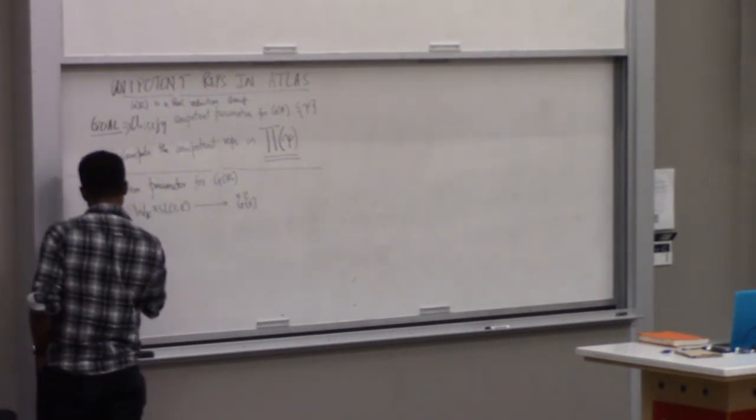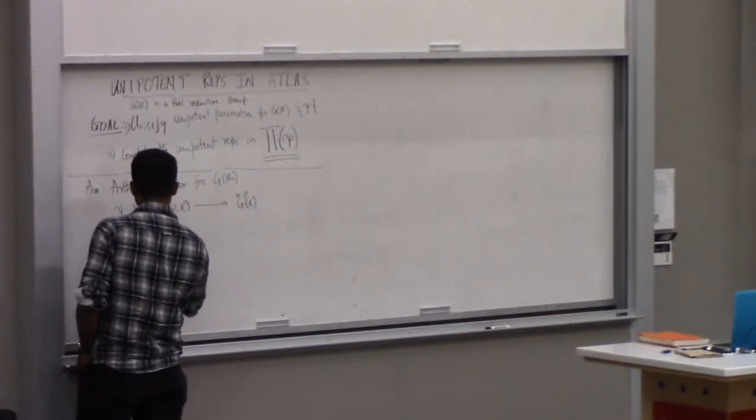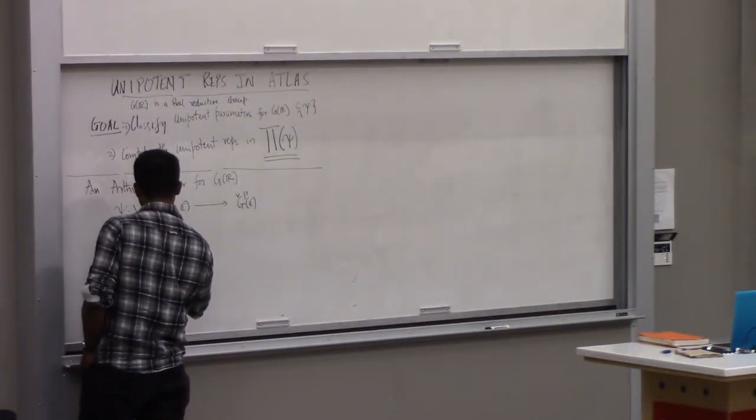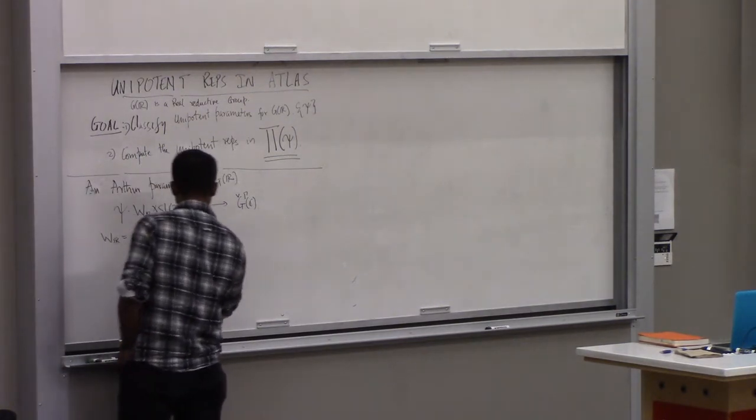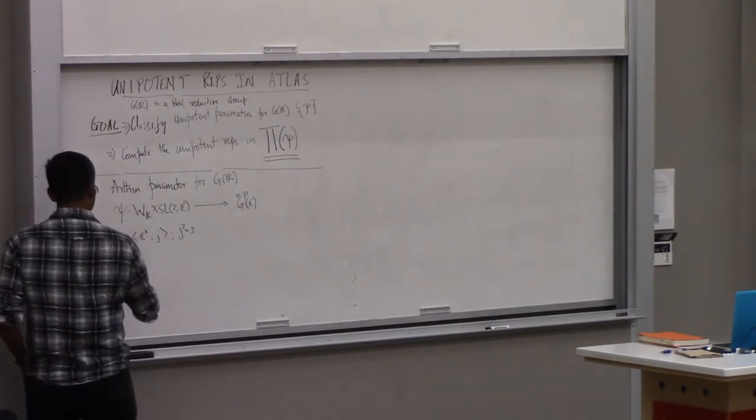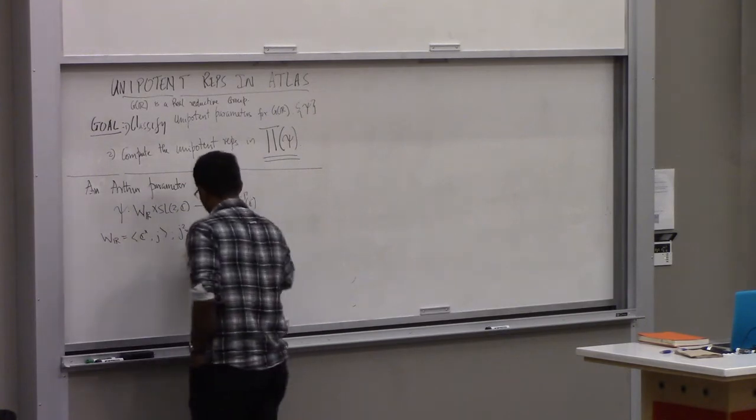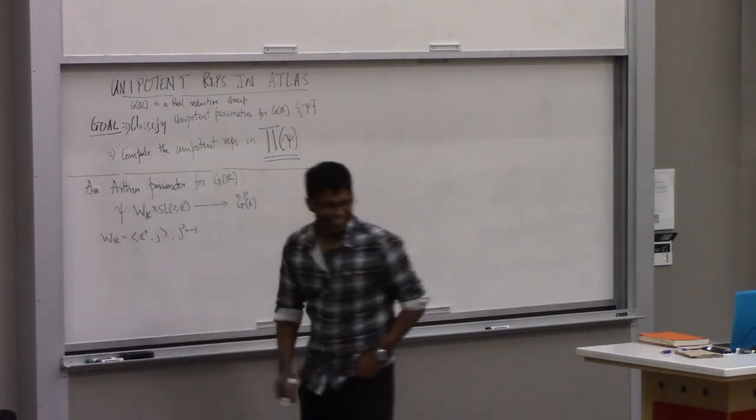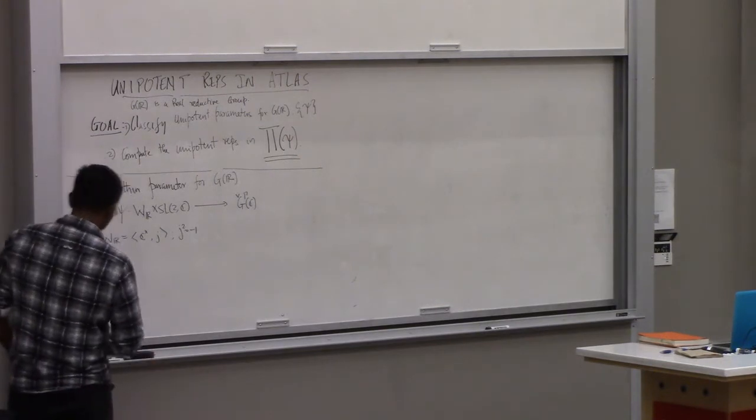The real Weyl group is generated by C cross and an element j, then j squared equals minus one. Sorry, minus one.